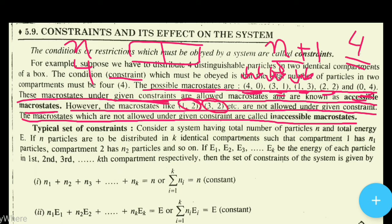But a macrostate like (1,2) — one particle in the first compartment and two in the second — is not possible, because the total number of particles must be 4. Here 1+2=3, which is not 4. And (3,2) gives 5, but we only have four particles. One particle is unused in one case, and an extra particle appears in another. So these macrostates are not allowed under the given constraint and are therefore called inaccessible macrostates.